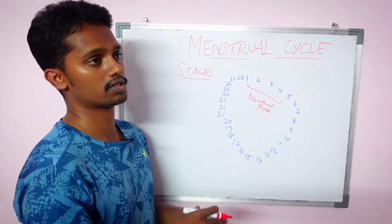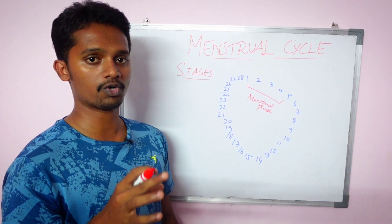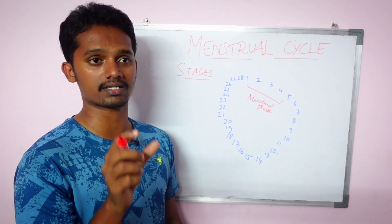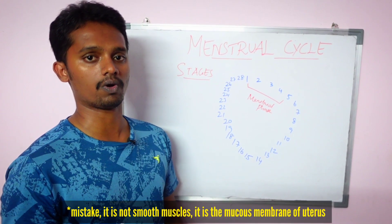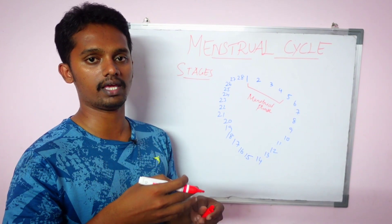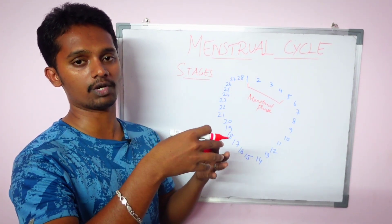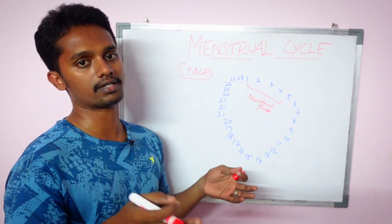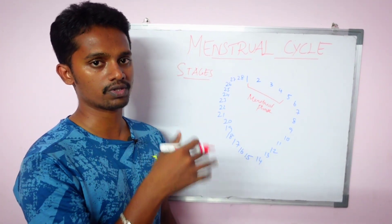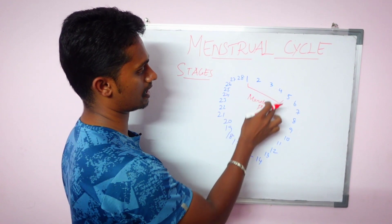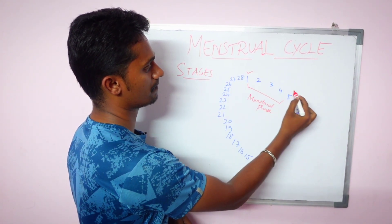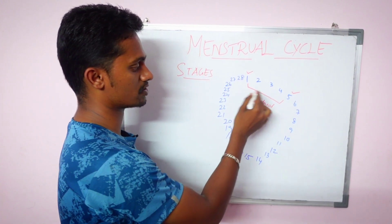But what is the bleeding? The blood comes from the uterus. It is the endometrium — the inner smooth muscle lining of the uterus. The endometrium is shed and broken down, and it is excreted through the vagina. This phase runs from day 1 to day 5.